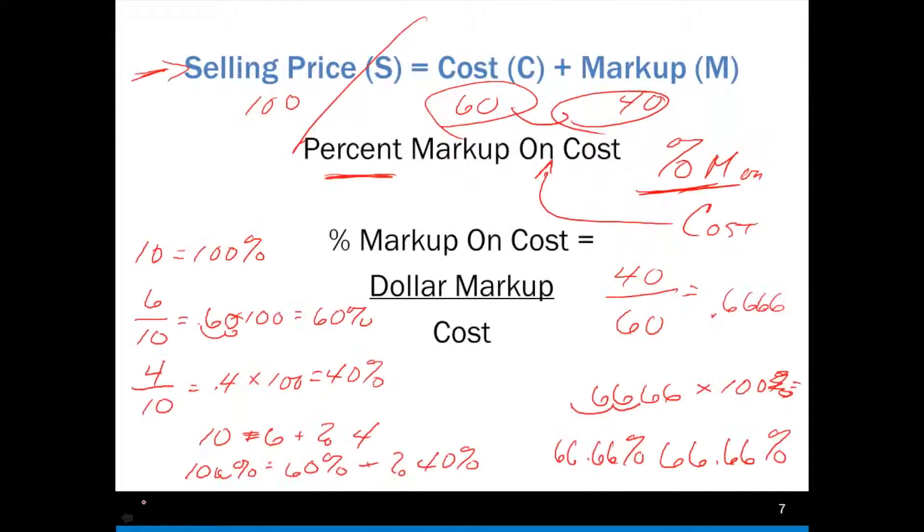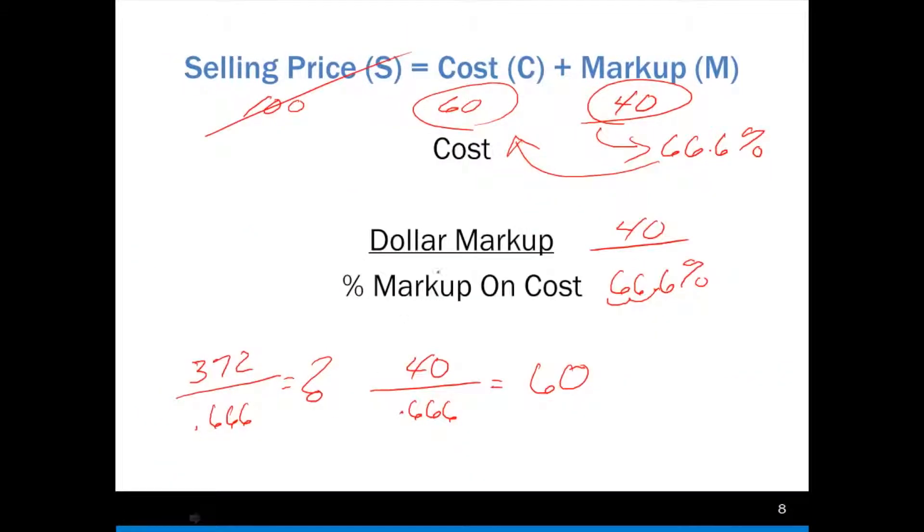That's slightly different than this. See, this is dollar markup over the cost itself, right? This is quantity over quantity to get the percentage. Here, we're given the quantity, but we're also given the percentage. Now, obviously,